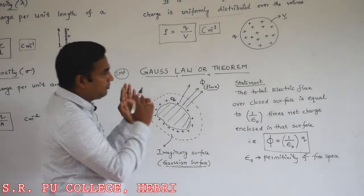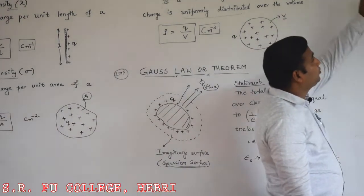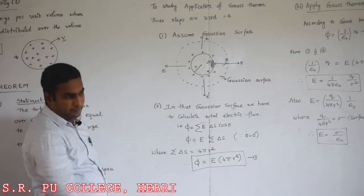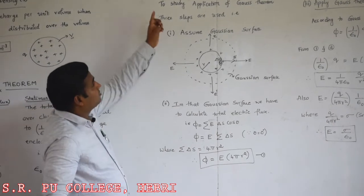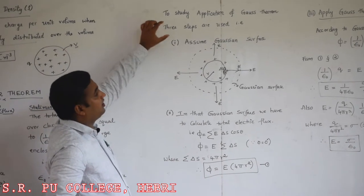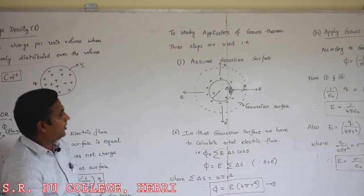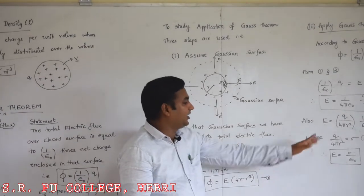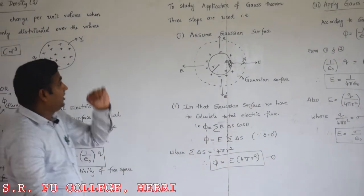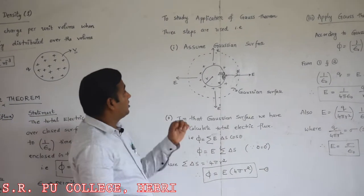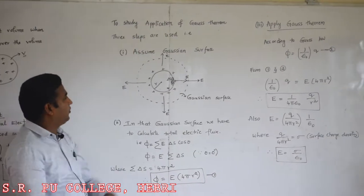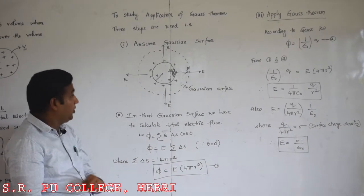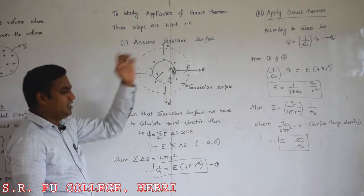By using this statement, we can think about the application part of Gauss theorem. Three steps are used to study the application of Gauss theorem — this is for understanding purposes. First, to study the application of Gauss theorem, we have to assume one Gaussian surface. We consider one spherical conductor of radius R with total charge Q uniformly distributed on the surface.